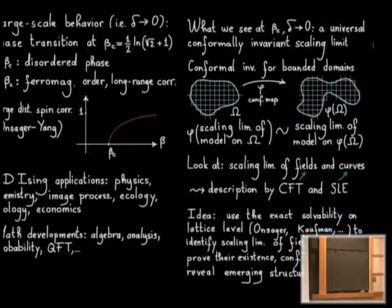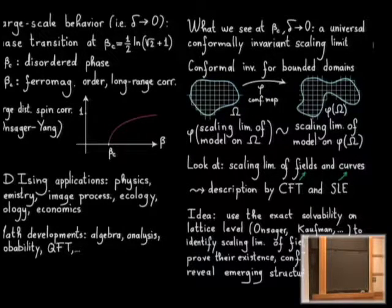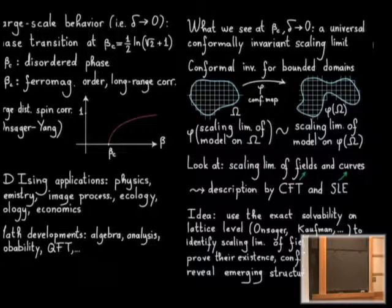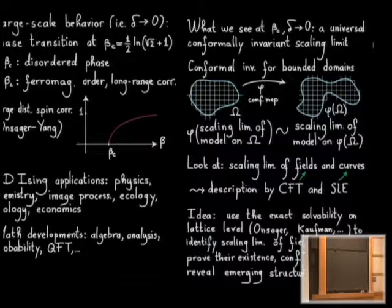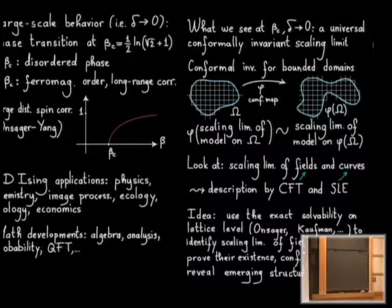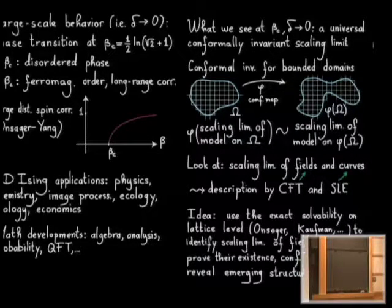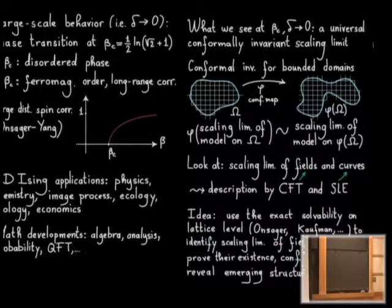The goal today is to explain why things work the way they do for the Ising model. The idea is that the lattice model has some magic property that we are going to use. Onsager revealed that the two-dimensional Ising model has some exact solvability. This exact solvability was recast by many people in many different forms. We will use one formulation of exact solvability to identify the scaling limits of the relevant fields and curves, and reveal some emerging structures consequent of conformal invariance and universality.